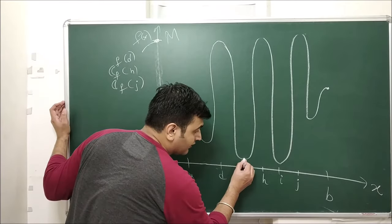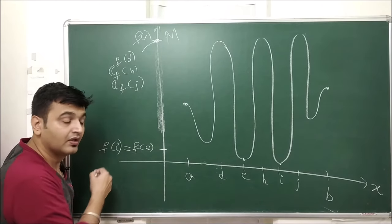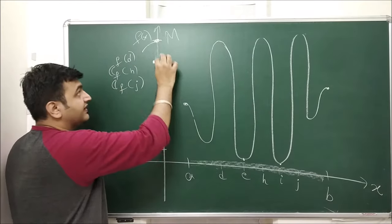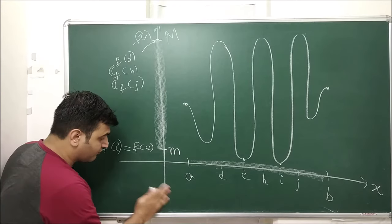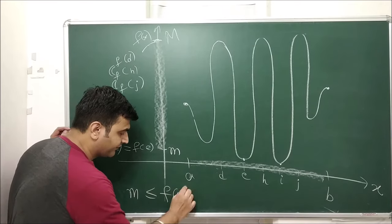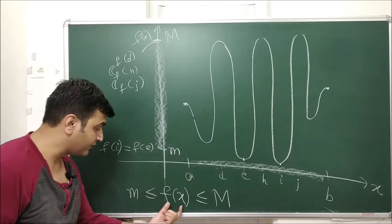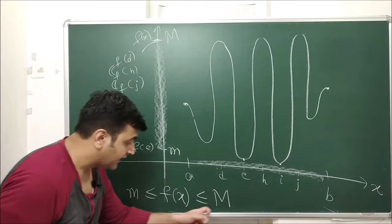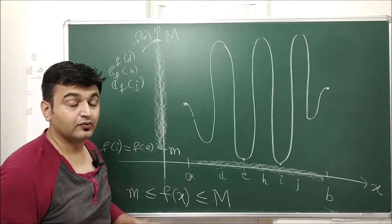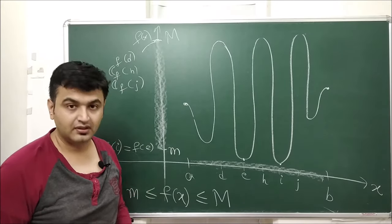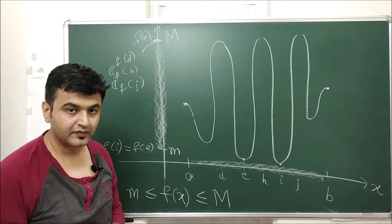Similarly for the minimum: you can see points E and I, where f(e) equals f(i). So if you take any x from the domain its image will always be above this value — let me call it small m. So small m ≤ f(x) ≤ capital M for all x in the domain. The key observation is: maximum and minimum values, if they exist, are always unique — they may occur at more than one point, but the values themselves are always unique.